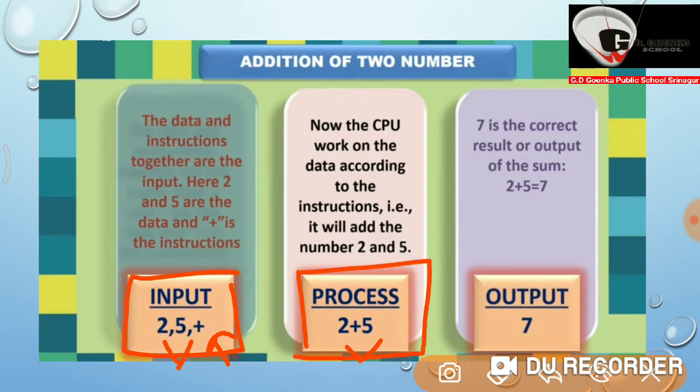After processing the data, it will provide us the correct result or output. So here, 7 is the correct result or output of the sum, that is, 2 plus 5 is equal to 7. So here, 7 is the output.